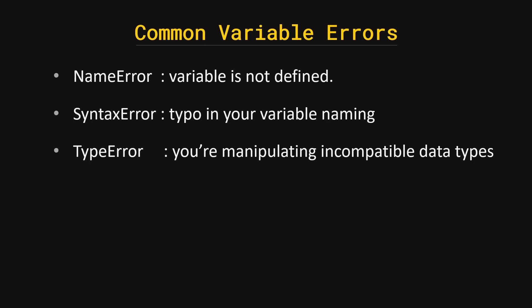Finally, here are some common errors with variables. A NameError occurs when you try to use a variable that hasn't been defined yet. A SyntaxError occurs when there is a typo or misspelling in your variable name. A TypeError occurs when you try to manipulate incompatible data types — we'll talk more about data types in a future video. Thank you.